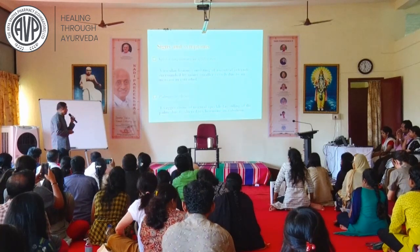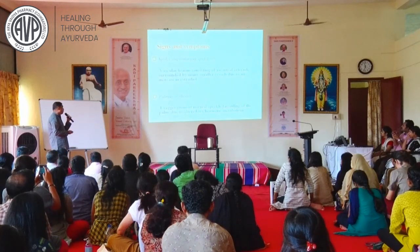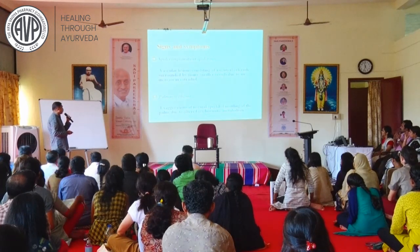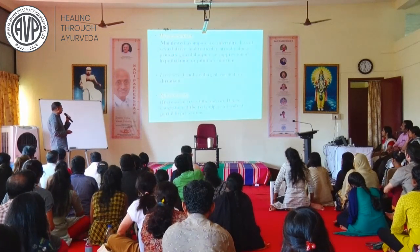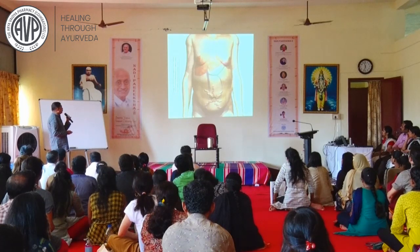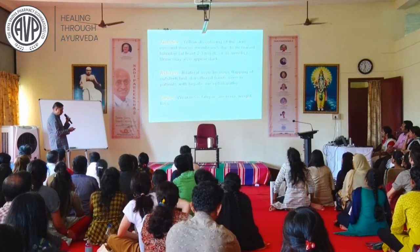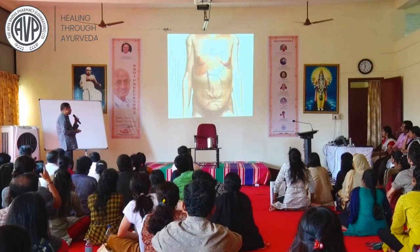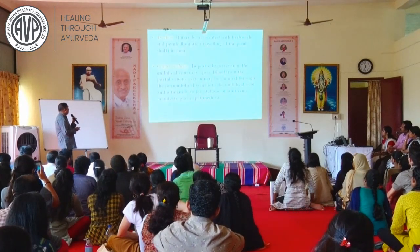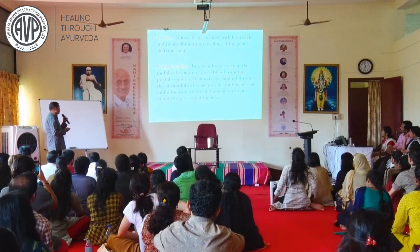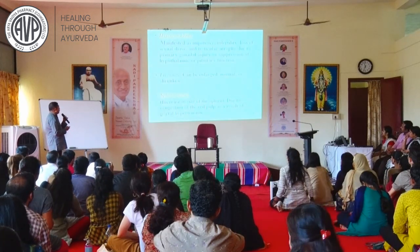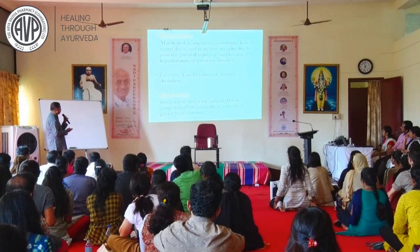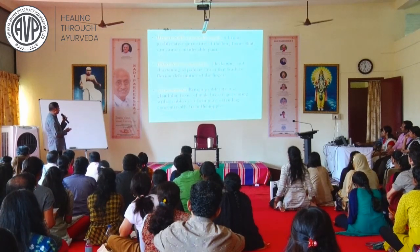Palmar erythema — there will be redness in the palmar area, exaggerations of normal speckled mottling of the palm due to altered sex hormone metabolism. You can see caput medusae — the dominant veins — and ascites will be there. Hypogonadism will be there, splenomegaly will be there — all these are liver cirrhotic pathology. Hypertrophic osteoarthropathy, Dupuytren's contracture, gynecomastia.